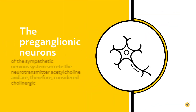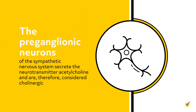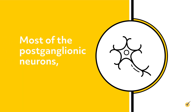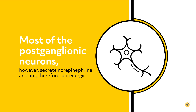The preganglionic neurons of the sympathetic nervous system secrete the neurotransmitter acetylcholine, and are therefore considered cholinergic. Most of the postganglionic neurons, however, secrete norepinephrine and are therefore adrenergic.